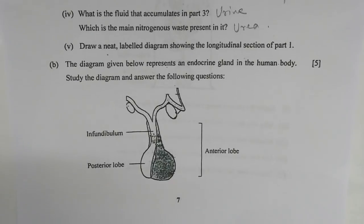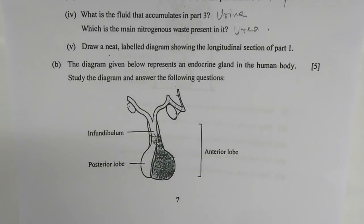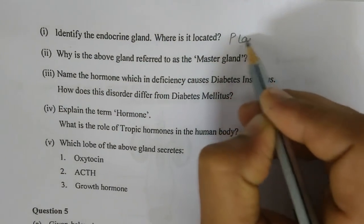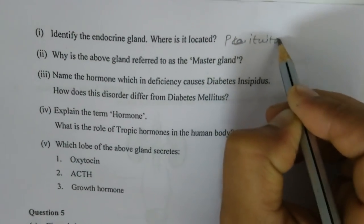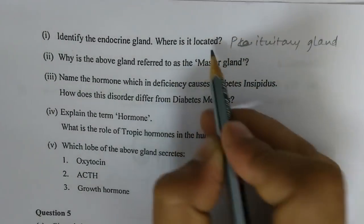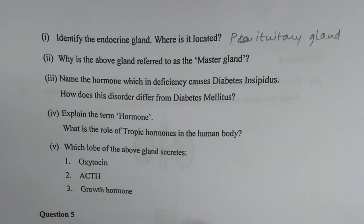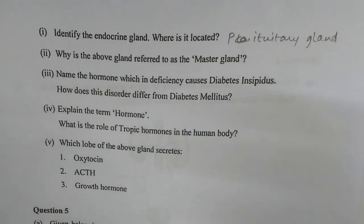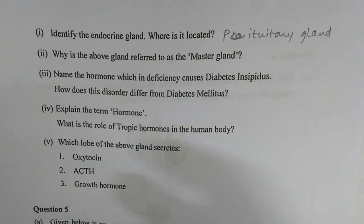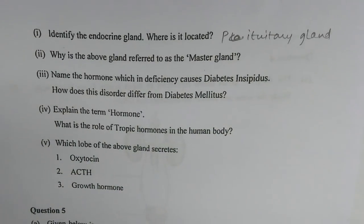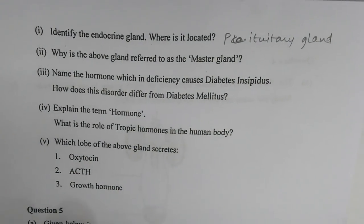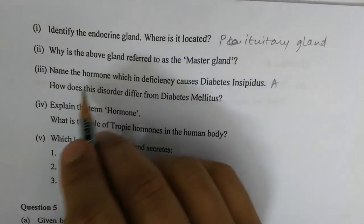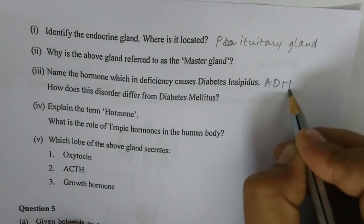Question 4b: The diagram represents an endocrine gland in the human body. Number one — identify the gland. It is the pituitary gland, located in the midbrain. Number two — why is it referred to as the master gland? Because it controls practically all other endocrine glands.